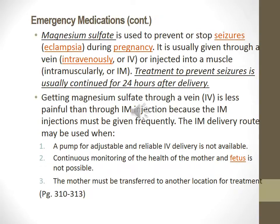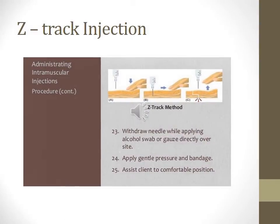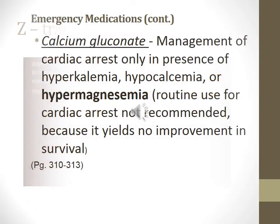Mag sulfate is used to prevent seizures due to eclampsia during pregnancy. It is usually given through a vein intravenously or injected into a muscle intramuscularly. Treatment to prevent seizures is usually continued for 24 hours after delivery. You can find this information in your textbook on pages 310-313. Calcium gluconate is used for mag toxicity and in the management of cardiac arrest for hyperkalemia, hypocalcemia, or hypermagnesemia.